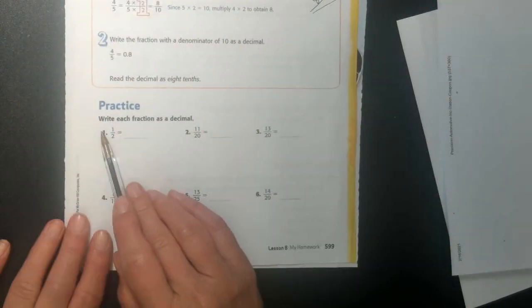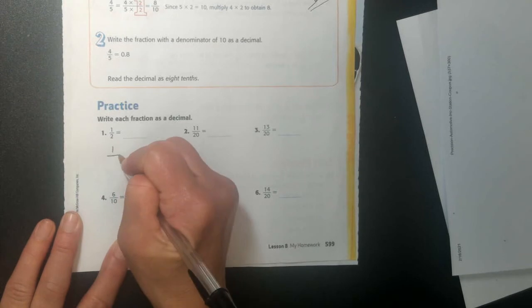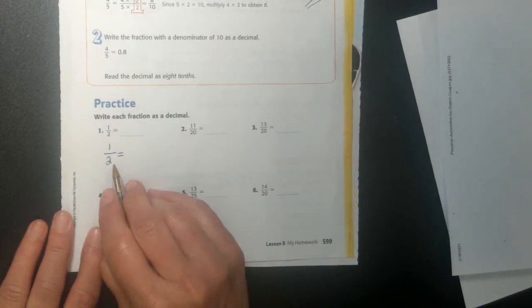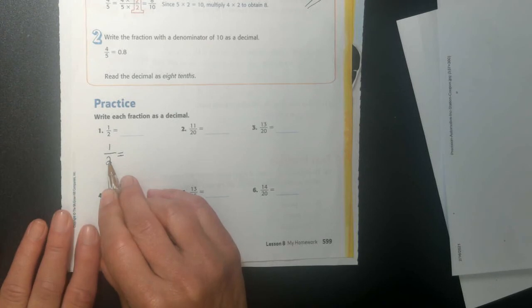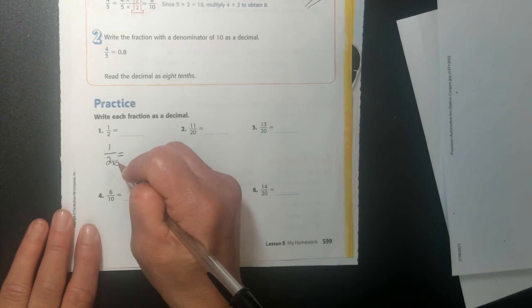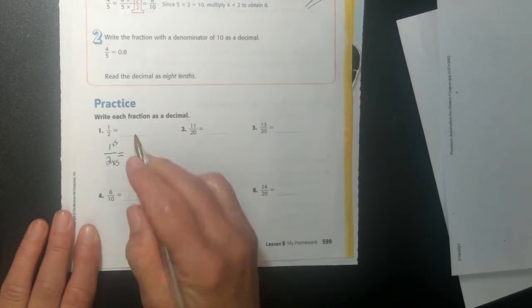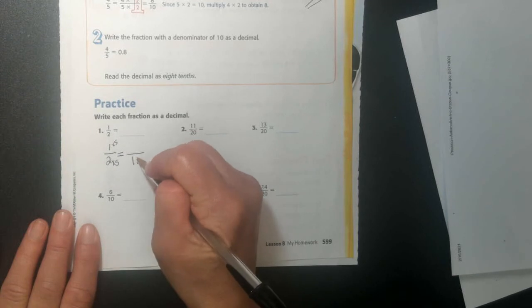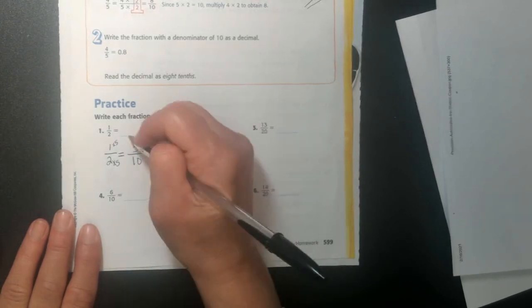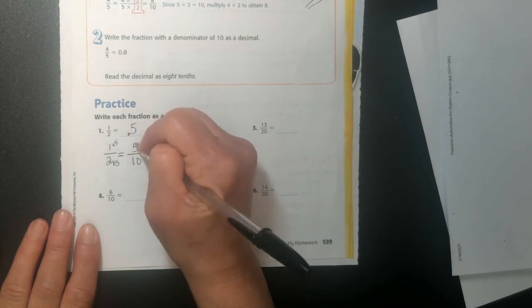Alright, so now we're going to write each fraction as a decimal. So we're going to change them into tenths, hundredths, thousandths, whatever we need to do. So to turn a 2 into a 10, I multiply it times 5. Whatever I do to the bottom, I have to do to the top. So 2 times 5 is 10, 5 times 5 is 25. And turning this into a decimal place, it's 5 tenths. So I put a 5 in my tenths place.